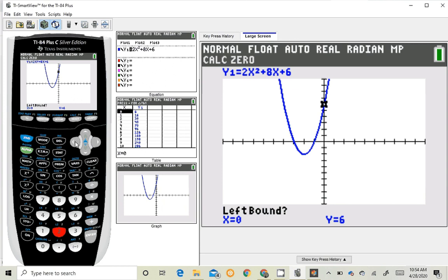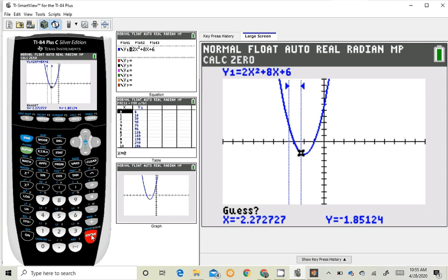And again, it's going to ask me left bound, right bound for each one. So I'm going to move my little cursor to the other side because I'm going to find this first one right here, first 0, and hit enter. And then it wants the right side. So again, I'm building that channel, which it's going to use to look for where the function has an output of 0. So I hit enter, and it says guess. We don't need to guess. Just hit enter again.